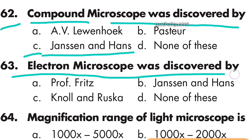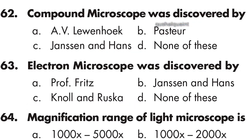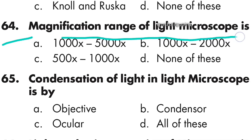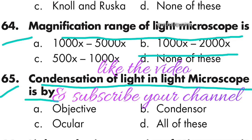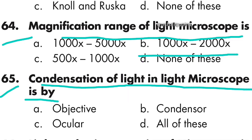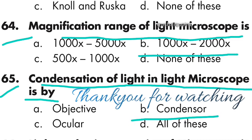Question number 63: The electron microscope was discovered by Knoll and Ruska. Option C is right — Knoll and Ruska. Question number 64: The magnification range of a light microscope is 1000 to 2000 times. Option B is right. Question number 65: Condensation of light in a light microscope is done by the condenser. Option B is right — condenser. Thank you for watching this video.